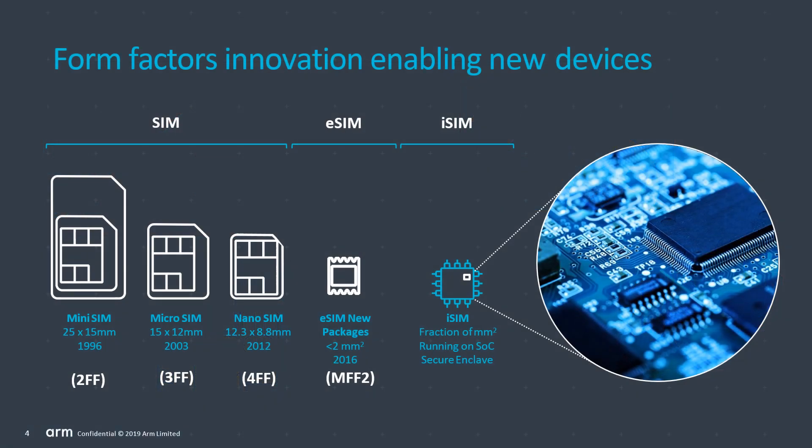This is a slightly technical slide that shows the size and technical names of different SIMs. Mini-SIM is called 2FF, where FF stands for form factor. Similarly, micro SIM is 3FF and nano SIM is 4FF. The embedded SIM, which has just been introduced, is MFF2. We will look at eSIM and iSIM in detail shortly.